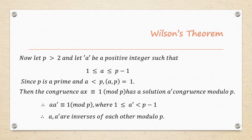Then the congruence A·X ≡ 1 (mod P) has a solution A', where A' is congruent modulo P. Since it is a solution, we replace X with A', giving A·A' ≡ 1 (mod P), where A' lies between 1 and P-1. Here A and A' are inverses of each other modulo P.